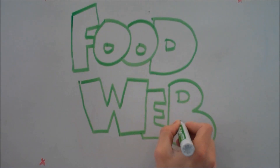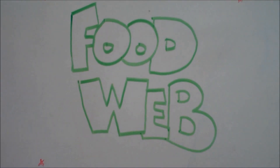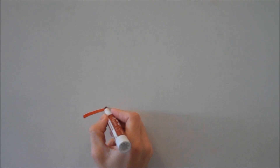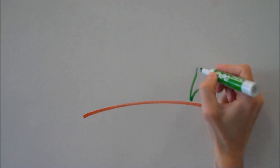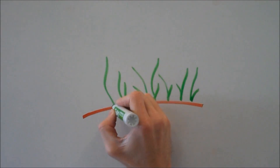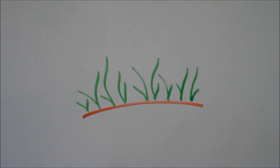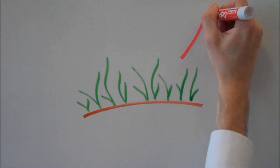Food webs — a way to show who's eating who, and to see the flow of energy in an ecosystem. All the energy on Earth comes from the sun. The sun's energy is then captured through the process of photosynthesis inside the leaves of plants. The energy is stored inside of plants until something comes along and eats them.